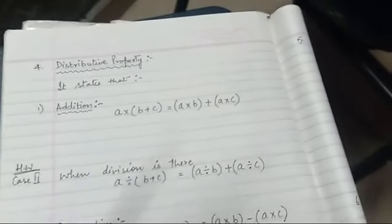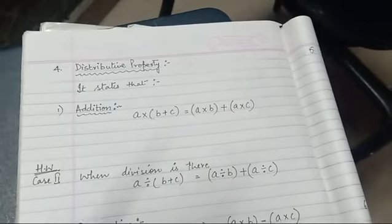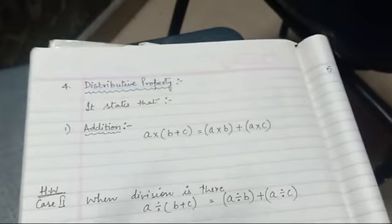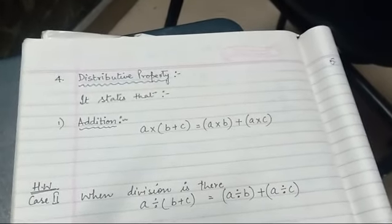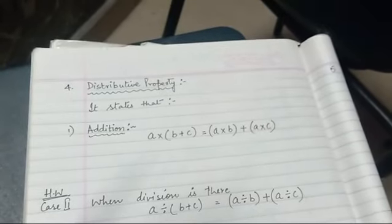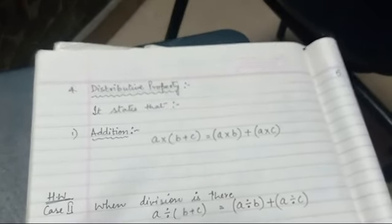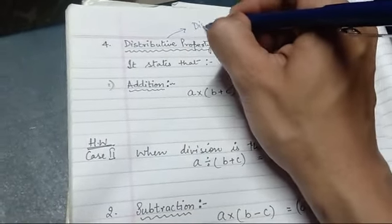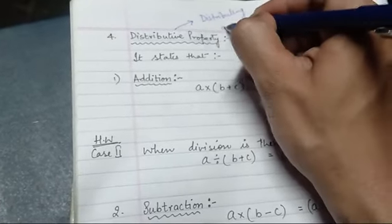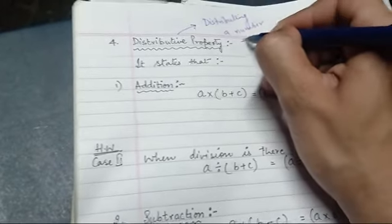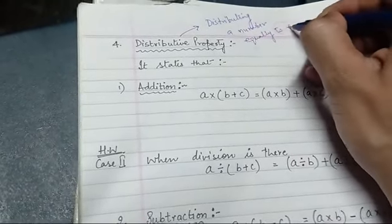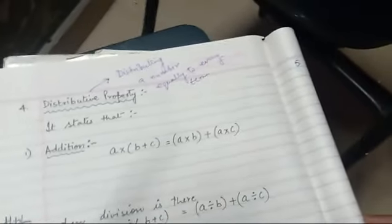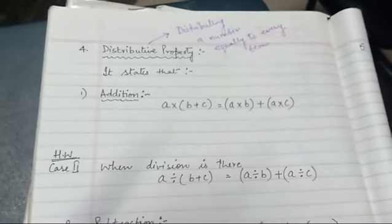Let us start with the next property: distributive property. What do you mean by distribution? For example, on your birthday you distribute sweets or toffees to your friends or teachers. But distributive property is basically distributing a number equally to every term. We distribute a number to each and every term.